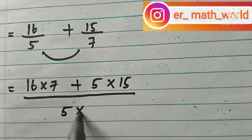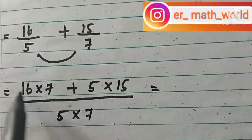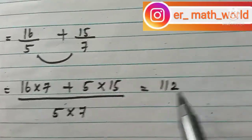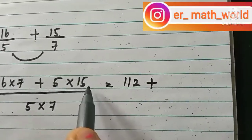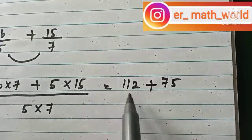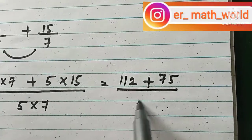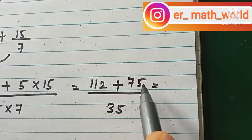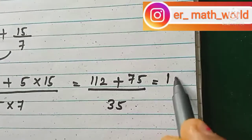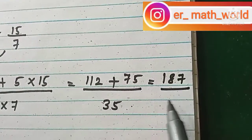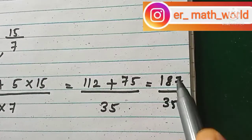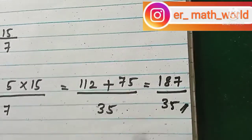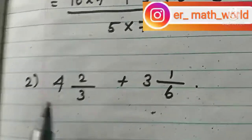16 times 7 gives 112, plus 5 times 15 gives 75, all divided by 35. Finally, adding these two terms gives 187 divided by 35. We can't simplify this fraction further, so this is the final answer.